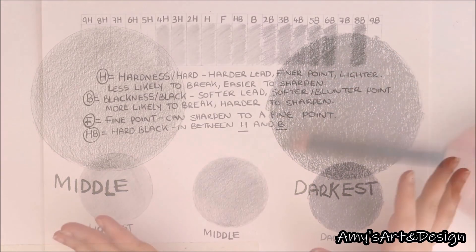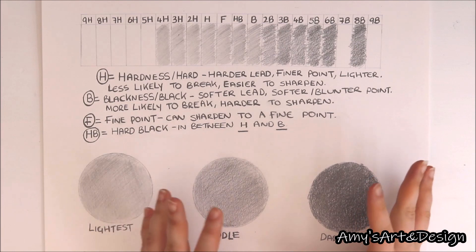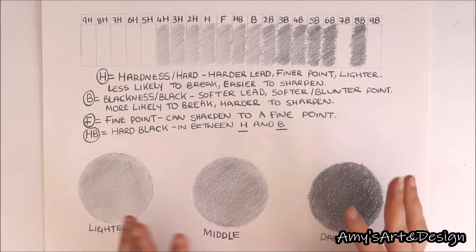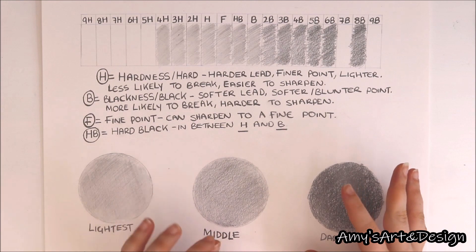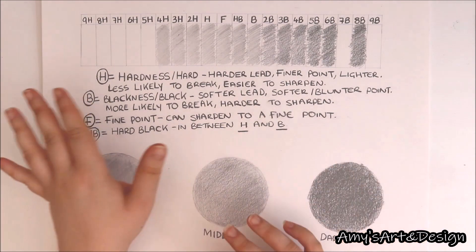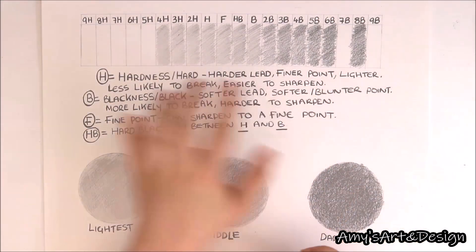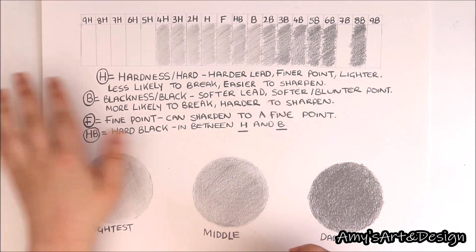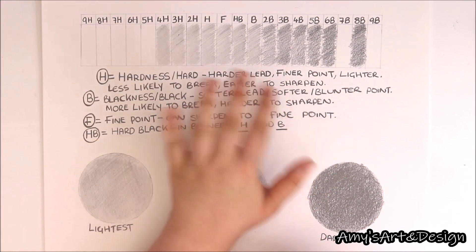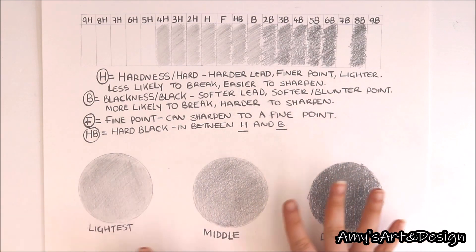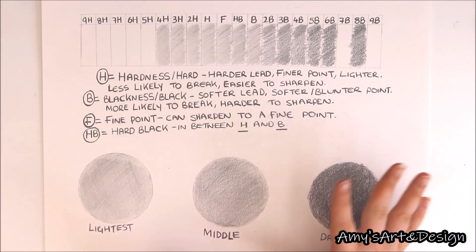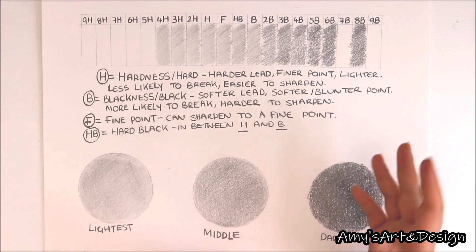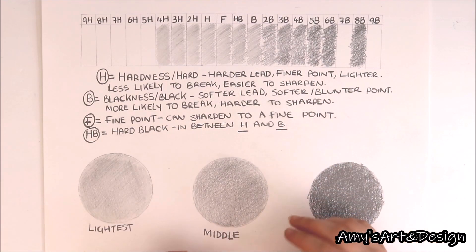Hopefully this tutorial gave you some helpful insight into understanding the graphite gradient pencil chart. It not only explained the difference between the lightest and darkest shades of graphite but also what the letters and numbers stand for and how they relate to the pencils. Through the demonstrations, you can see that you don't actually need every single shade — even with some shades you'll still get a good enough range to draw.